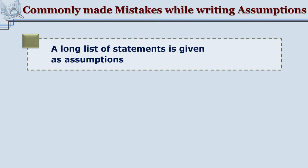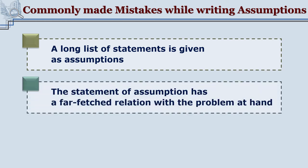We shall now see some of the mistakes that are made while writing assumptions. A novice researcher often writes a long list of statements in the name of assumptions. Only one or two facts that have a direct bearing on the research should be picked up as assumptions — not a whole list of statements. At times, a statement of assumption has a very far-fetched relationship with the problem at hand, with almost no real impact on the problem at study, yet such statements are still written as assumptions.